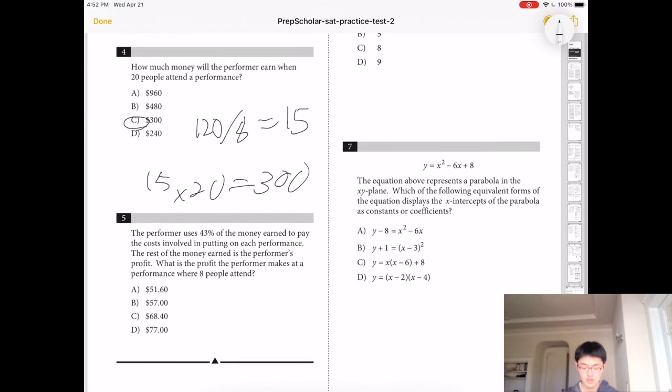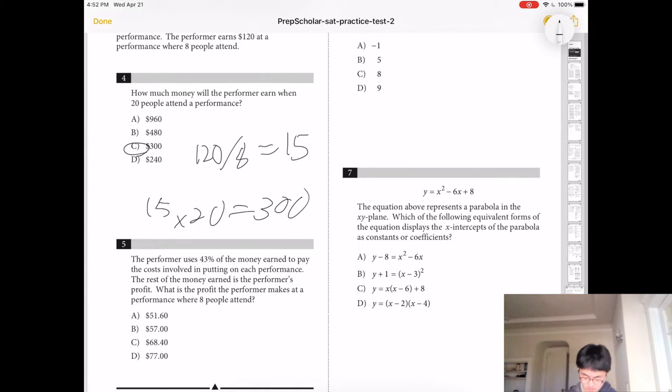Number 5, he uses 43% of the money. Okay, so you would put 57% as profit. So where 8 people attended, you get $120. So I'm going to calculate it. I'm going to put 0.57 times 120 to get 68.4.